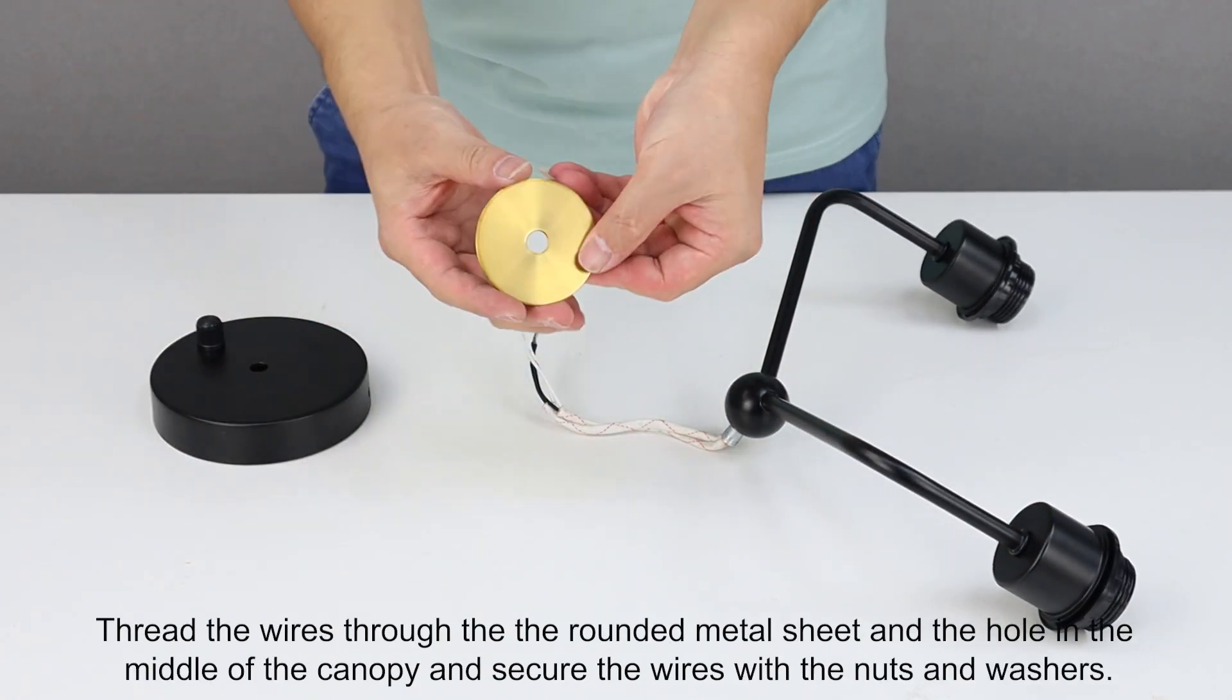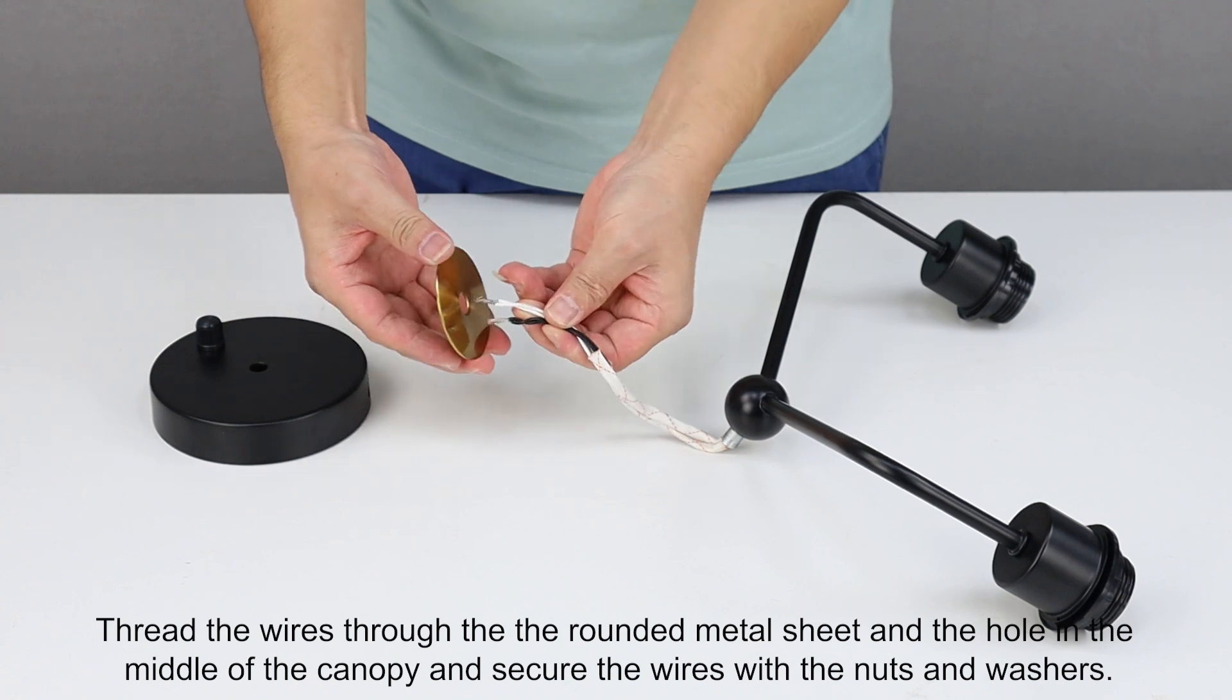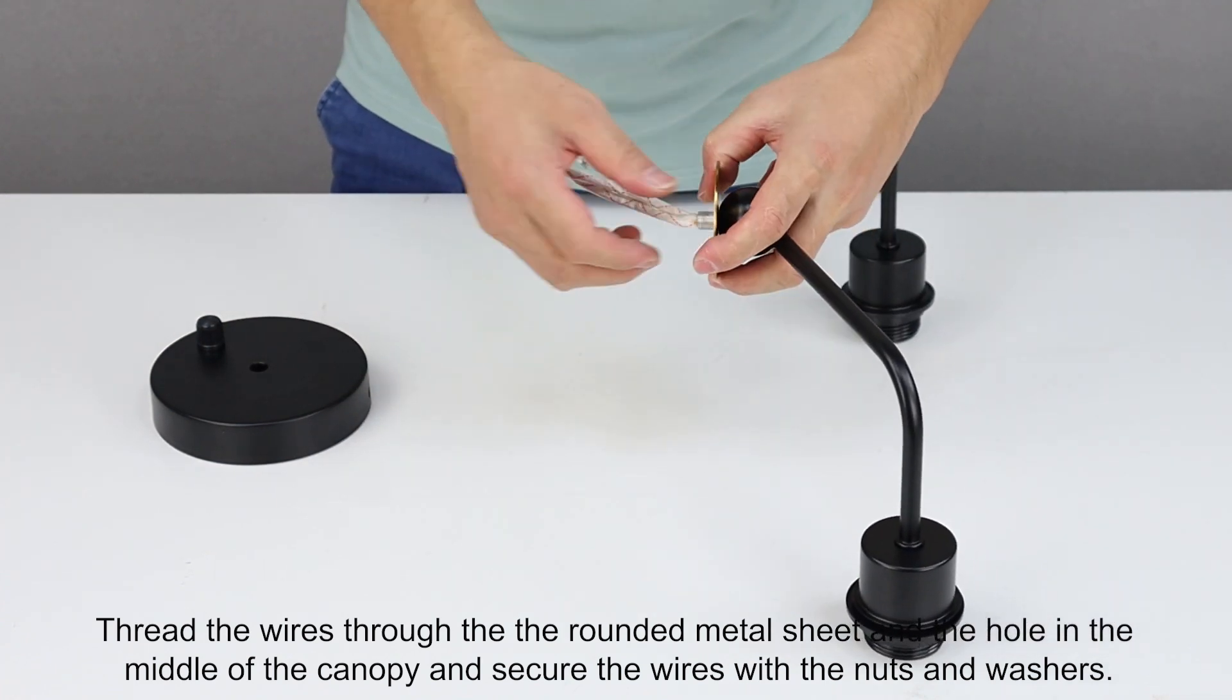Thread the wires through the rounded metal sheet and the hole in the middle of the canopy and secure the wires with the nuts and washers.